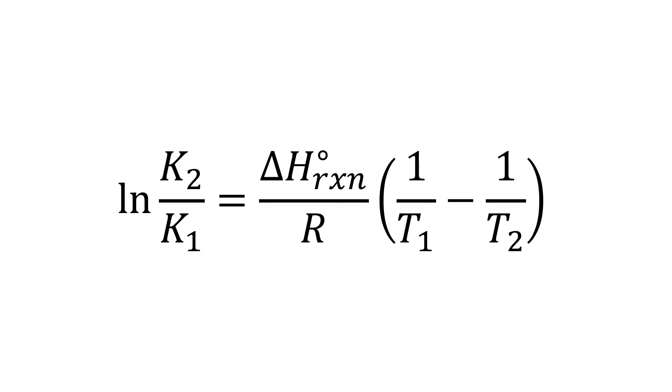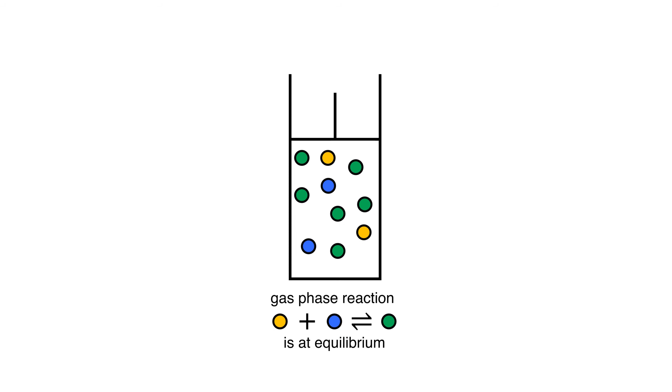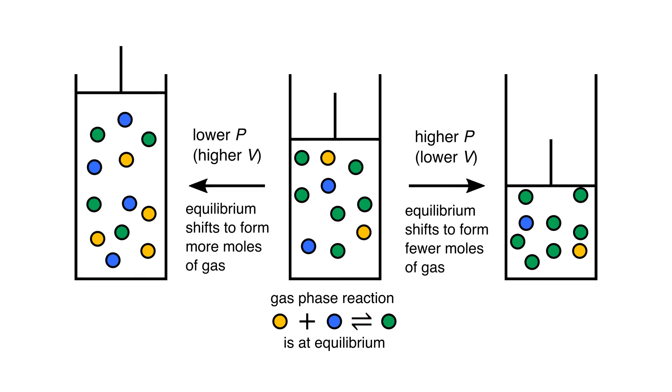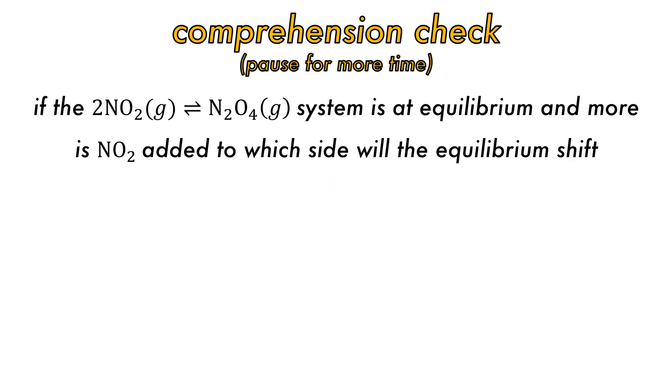Pressure can change the equilibrium position. Here is a reaction of two gas molecules, the yellow and blue circles combining to make a single product, the green circle, at equilibrium. If the pressure is increased by reducing the volume, then the system will shift the equilibrium to reduce the pressure by reducing the number of molecules in the system, and the reactants will be consumed as two moles can be reduced to one. Conversely, if the pressure is reduced, the system will move to increase the pressure, and green product molecules will be converted into reactants, thus increasing the number of molecules. Let's check comprehension.